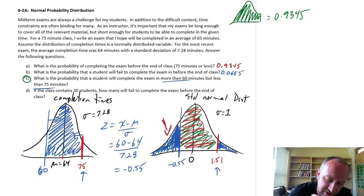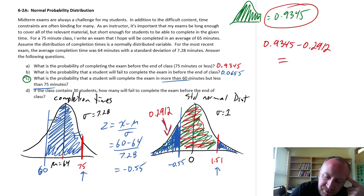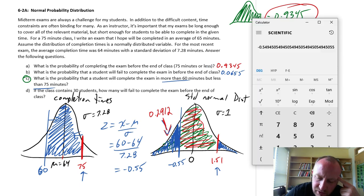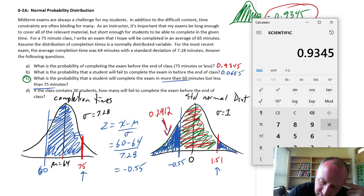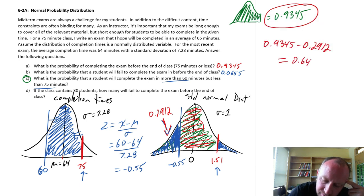And so here, this area, 0.2912. So if I subtract that out of this, 0.9345 minus 0.2912, that will give us the area in between. So this is going to be 0.9345 minus 0.2912, 0.6433. And there's our answer to part C, 0.6433.